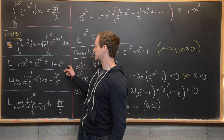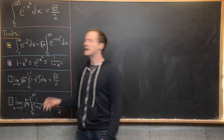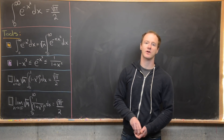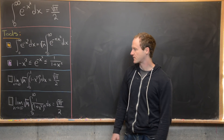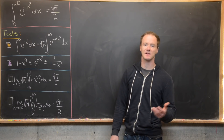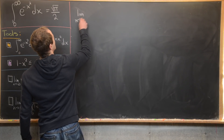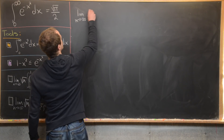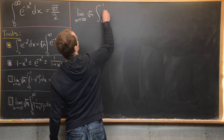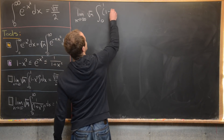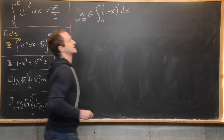With the full inequality established, we're ready to calculate our two integrals. The first is the limit as n goes to infinity of the square root of n times the integral from 0 to 1 of (1 minus x squared) to the n dx.